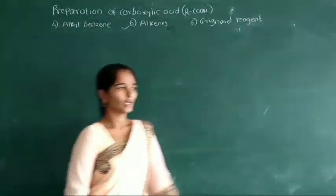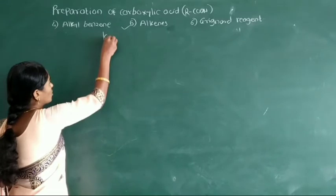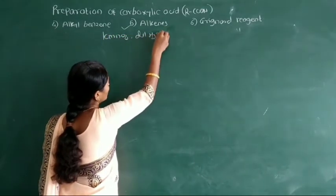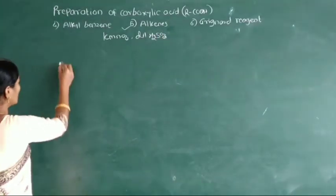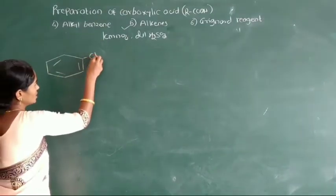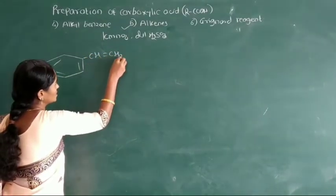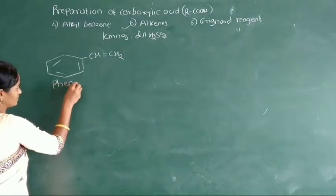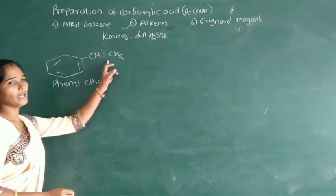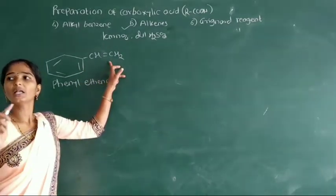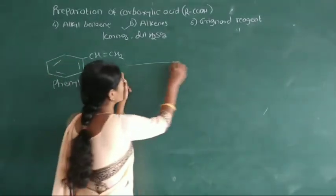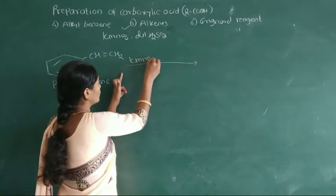In this method, carboxylic acid is also prepared by oxidation of alkenes by KMnO4 with dilute H2SO4. We take here an example — phenyl ethylene, that is, styrene. This phenyl ethylene — like the alkyl benzene — this ethyl benzene oxidizes with an oxidizing agent, in the presence of dilute conditions.